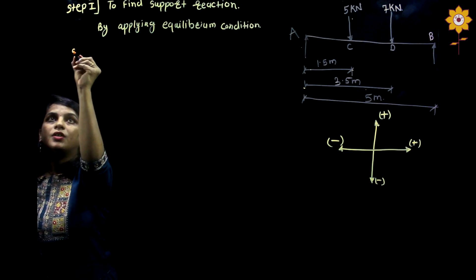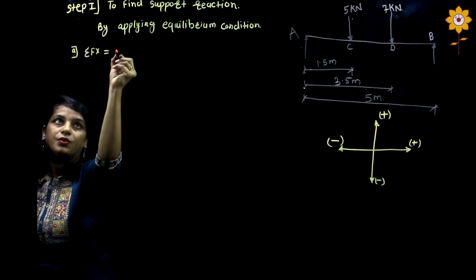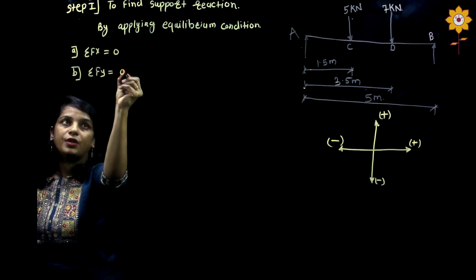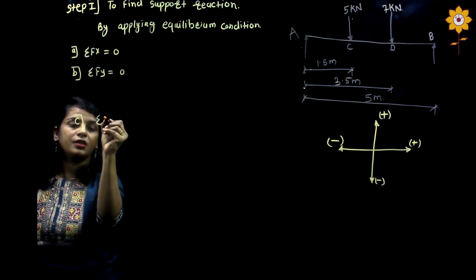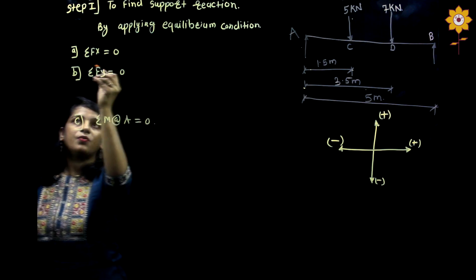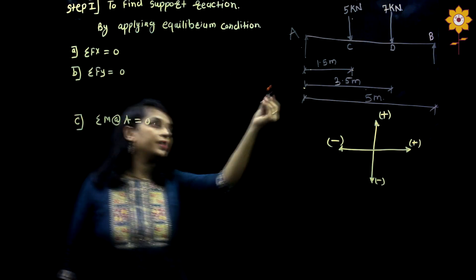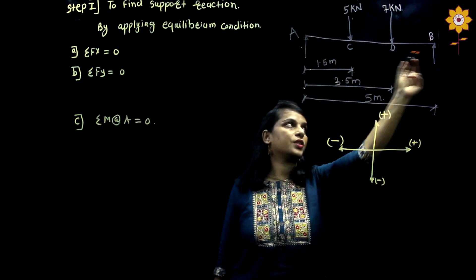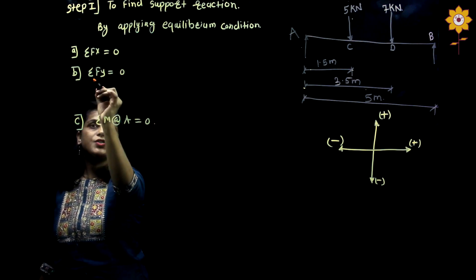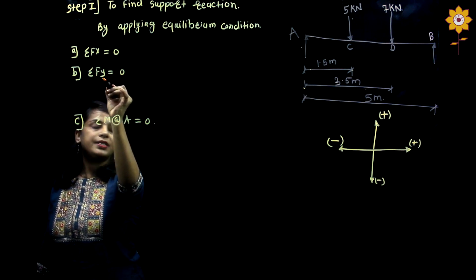The first equilibrium condition is summation Fx = 0. Second condition is summation Fy = 0, and the third condition is summation of moment at point A = 0. The algebraic sum of all x-components: in this diagram there is no horizontal force, so summation Fx = 0 is satisfied. For the second condition, summation Fy = 0 means the algebraic sum of all forces in the y direction.